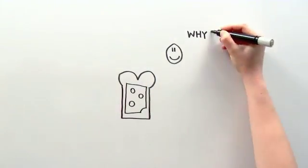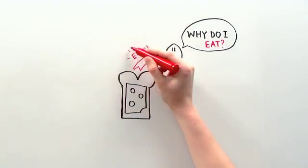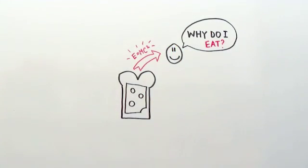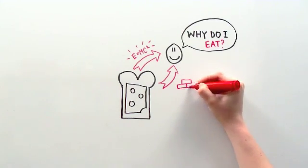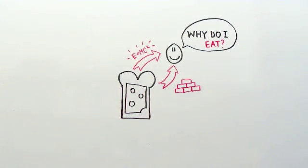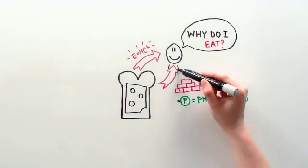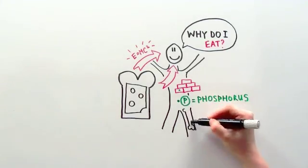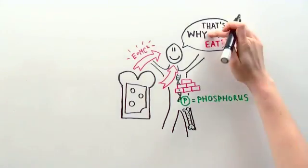But what exactly is eating good for? Of course you need energy to walk, run, work and to be a couch potato. But eating is especially important to supply the building blocks in your body. One of those building blocks is phosphorus. Your DNA and bones consist of phosphorus and every day you need to replenish it. That's why you eat.